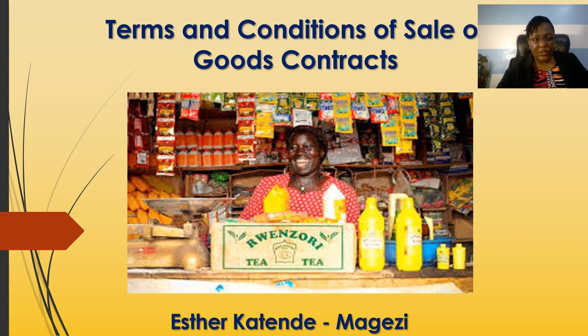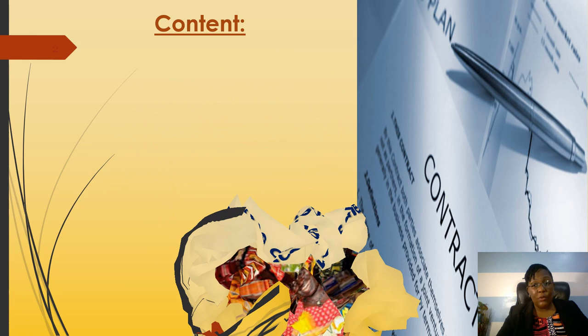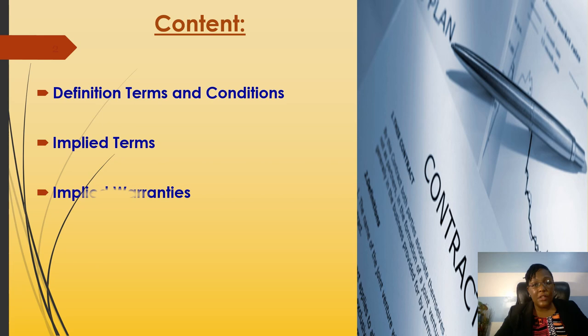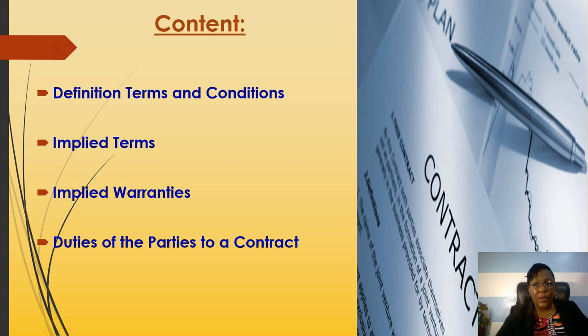Welcome to this presentation. I'm principally going to cover the areas we did not finish covering in class. In this presentation I'm going to talk about mainly the terms and conditions of sale, or a contract of sale of goods. We are going to look at definitions of terms and conditions, what are the implied warranties, what are the implied terms, and what are the duties of the parties. There are just 15 slides.